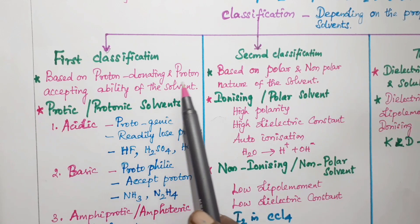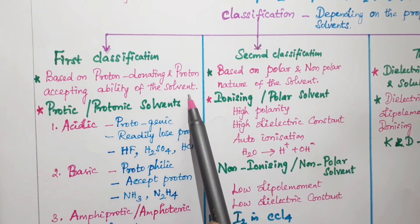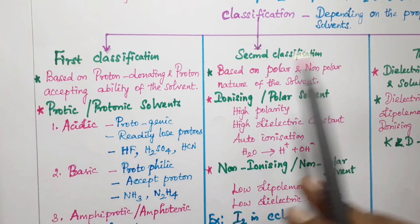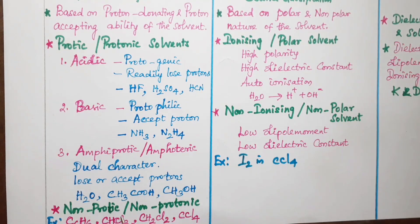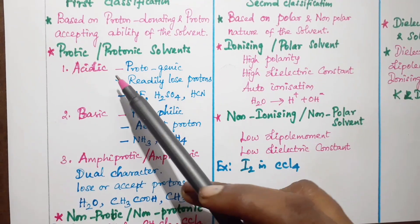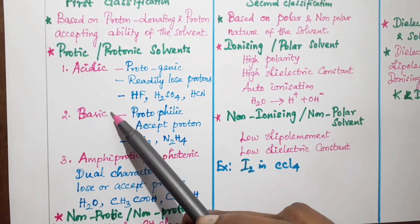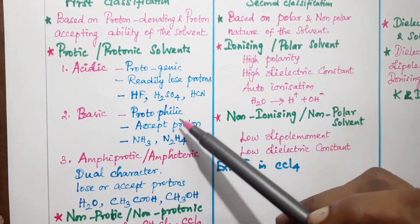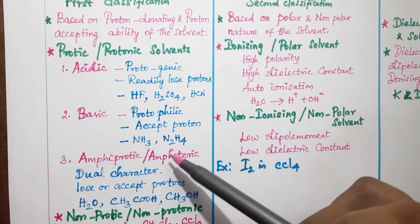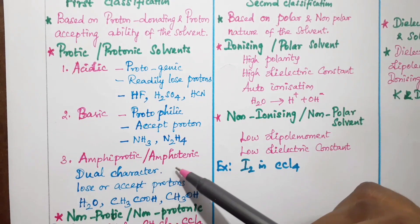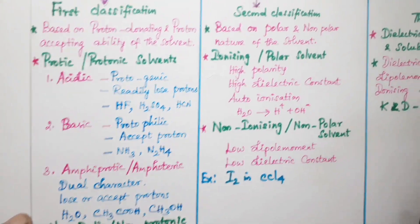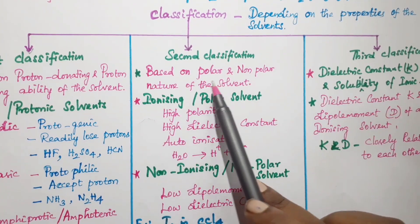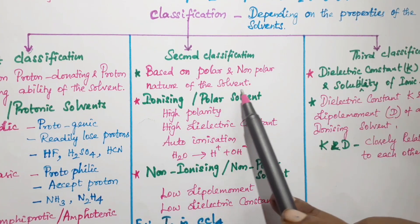To summarize the first classification: it is based on proton-donating and proton-accepting ability, giving two types — protic and non-protic. The third classification covers acidic (loses protons), basic (accepts protons), and amphiprotic (dual character) solvents.